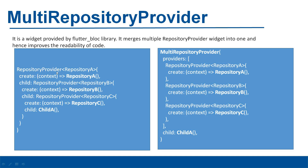On the left-hand side you can see that a repository provider has been used which provides repository A, and as a child again a repository provider has been used providing repository B, and again a repository provider providing repository C. This means multiple repository providers are nested with each other, and this decreases the readability of the code.